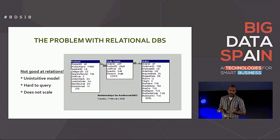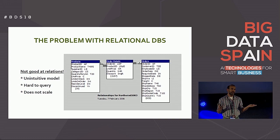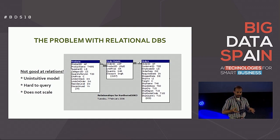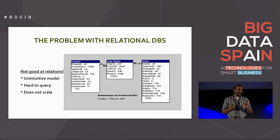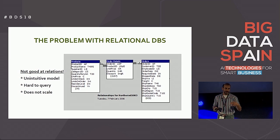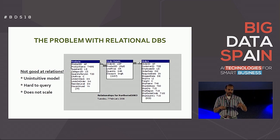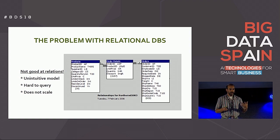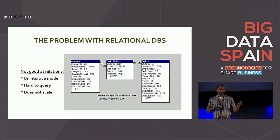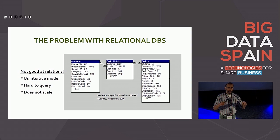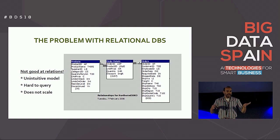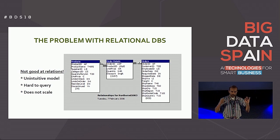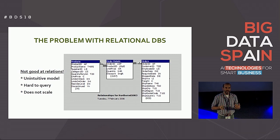When somebody introduces a new kind of database, the first question to ask is: why not use relational databases? Relational databases are great, but ironically one of the problems they have is that they're not very good at handling relations. To show that, I have a slide here showing part of what's probably the most famous schema in the relational database world — the Northwind schema — with products and orders.